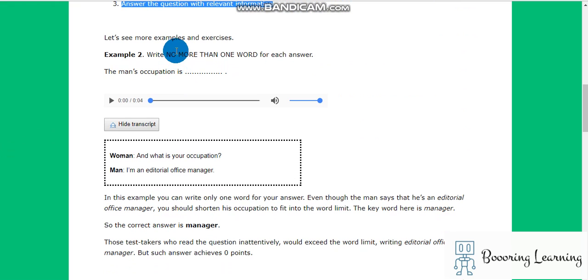And you can increase your band score with just studying listening for a short time. Example: write no more than one word for each answer. The man's occupation is... Let's start. And what is your occupation? I'm an editorial office manager.